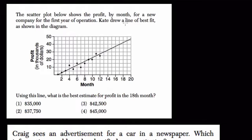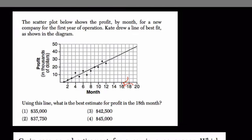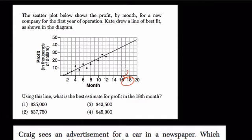The scatter plot below shows the profit by month for a new company, and they want us to use this line to estimate the profit in the 18th month. Here's the 18th month right here. If you look where the month is 18, just look up to the line and see what the profit is at that point, and that's your answer. So it's a little bit above $40,000. $45,000 will be the halfway mark. It doesn't quite reach that, so we'll pick $42,500.